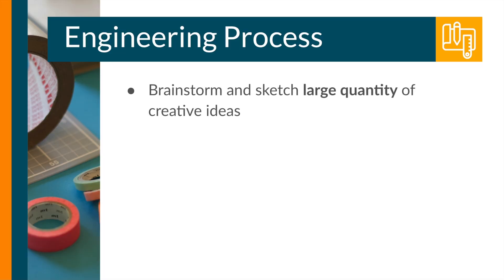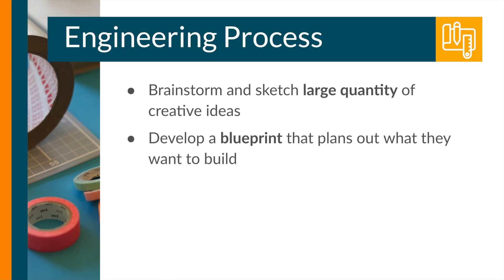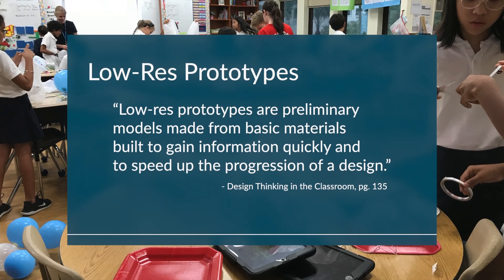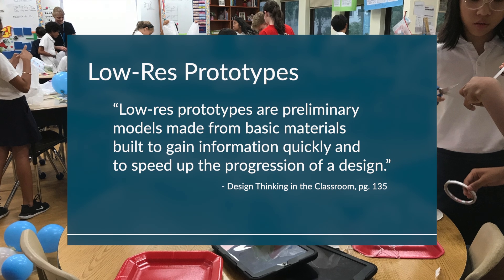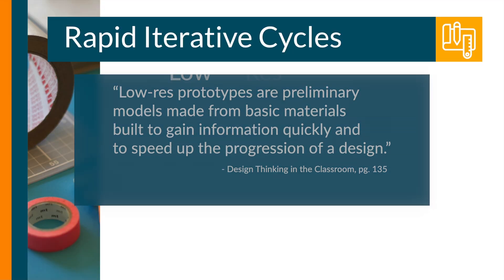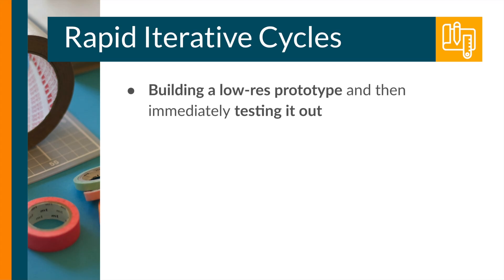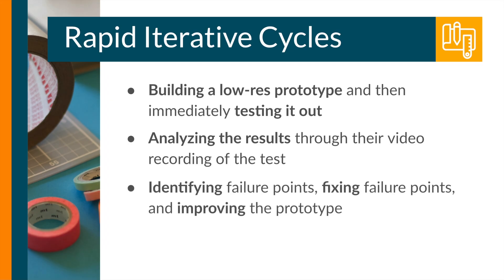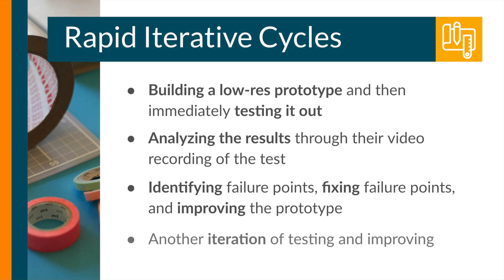Students started with a large quantity of sketches and a blueprint of their prototype, then quickly built a low-res prototype to test it out. Low-res prototypes are preliminary models made from basic materials, built to gain information quickly and speed up the progression of a design. Rapid iterative cycles consisted of quickly building a low-res prototype, immediately testing it off the drop test station, analyzing results through video recording, identifying failure points, fixing those failure points with additional adjustments, and then testing again — multiple times. The more rapid iterations, the better.